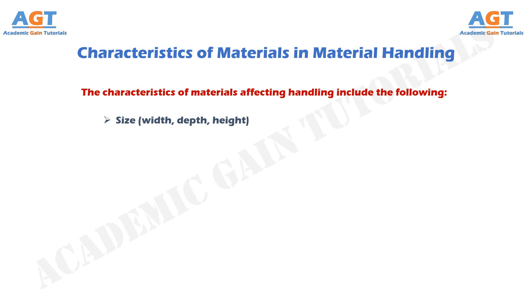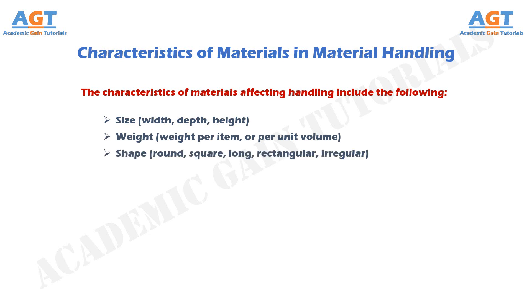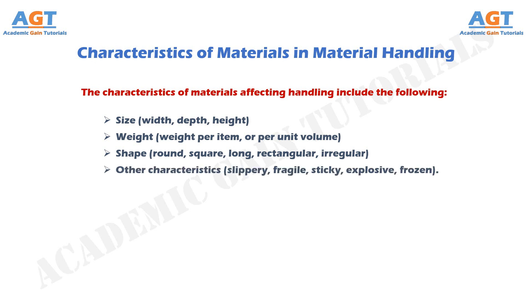Weight of a material may include the weight per item or per unit volume of the material. Shape of the material takes into account whether the material is round, square, long, rectangular, or irregular in shape. Other characteristics, like whether the material being handled is slippery, fragile, sticky, explosive, or frozen, are also taken into account during material handling.